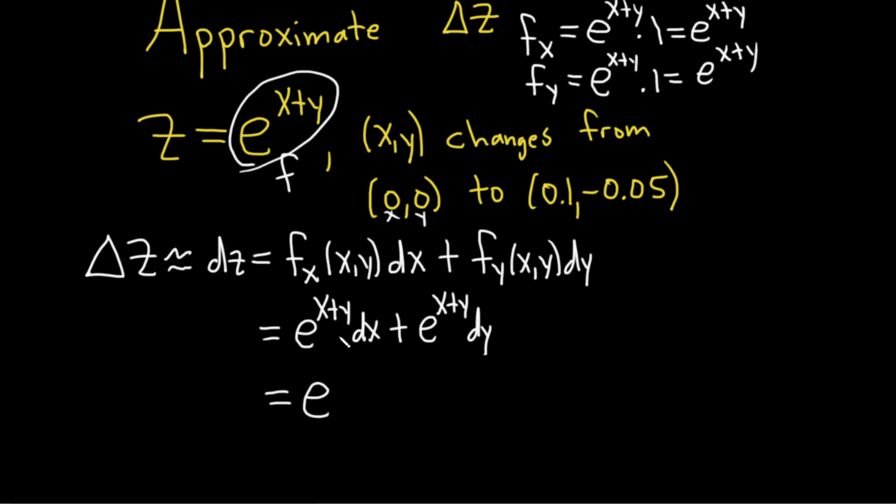This will be e to the 0 because 0 plus 0 is 0. And then dx is going to be this number minus this number. So in this case, it's 0.1 plus e to the 0. Dy is going to be this number minus this number. Very important. In this case, it's 0. But if you had a number here, there is some subtraction involved. So it's this minus this. So it becomes negative 0.05.